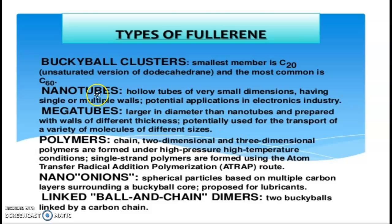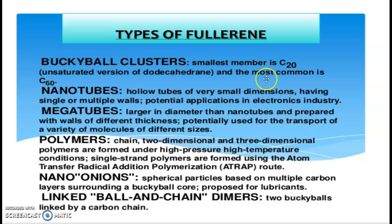Now we will discuss them one by one. A Buckyball cluster is a cluster of carbon atoms with the smallest member having 20 carbon atoms — that is C20 fullerene — which is an unsaturated version of a dodecahedron having 12 sites. The most common one is C60, that is 60 carbon atoms forming a football-like structure, called C60 fullerene.